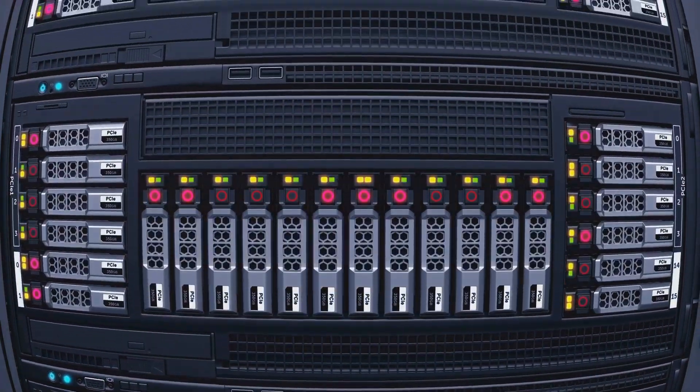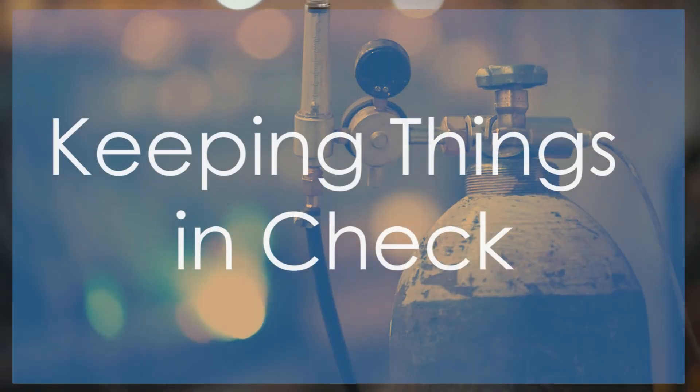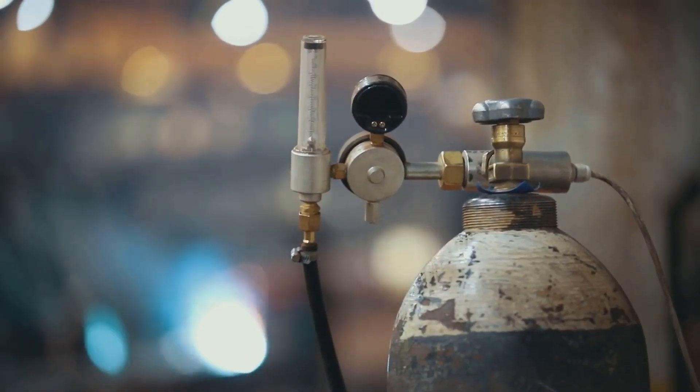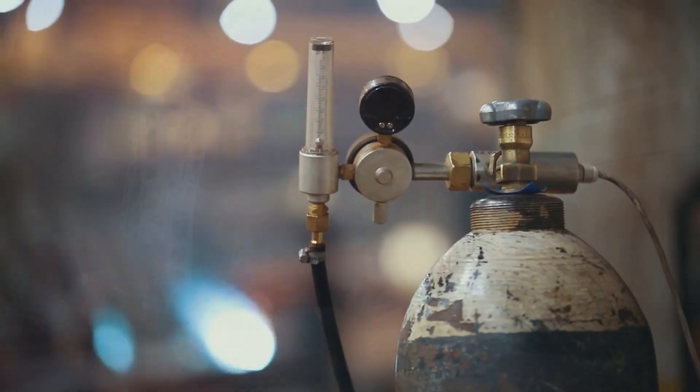Grounding gives electricity a safe path to flow, protecting us and our equipment from dangerous shocks. Redundancy is about having backups for our backups, ensuring our systems can handle anything. Level sensors are the eyes of tanks and vessels, letting us know how full or empty they are.